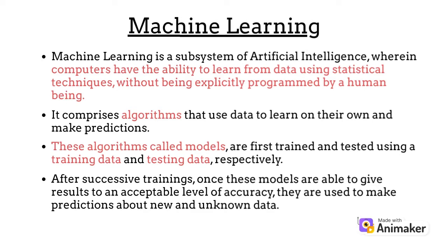Machine Learning is a subsystem of Artificial Intelligence wherein computers have the ability to learn from data using statistical techniques without being explicitly programmed by a human being. It comprises of algorithms that use data to learn on their own and make predictions. These algorithms, called models, are first trained and tested using training data and testing data respectively. After successive trainings, once these models are able to give results to an acceptable level of accuracy, they are used to make predictions about new and unknown data.